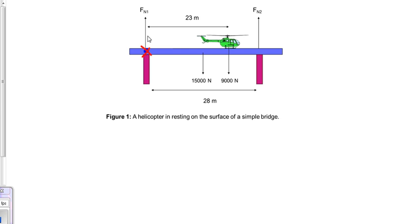We need to get force number two and force number one in this calculation. We'll use torques first and sum of forces second. So let's do sum of all torques. That's going to be about this position here. It equals zero since the bridge is not moving.